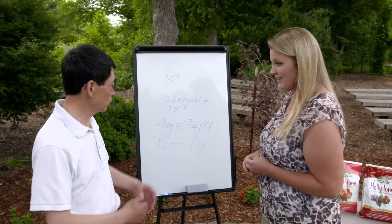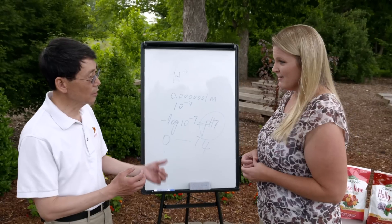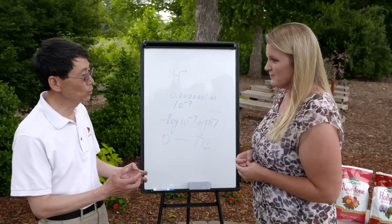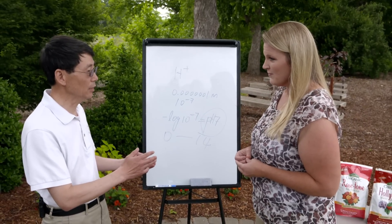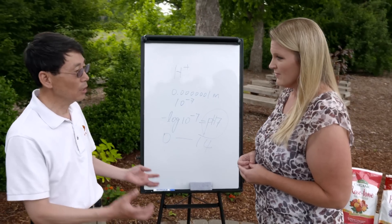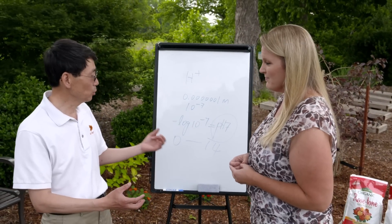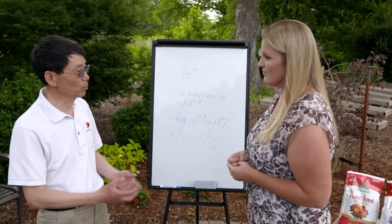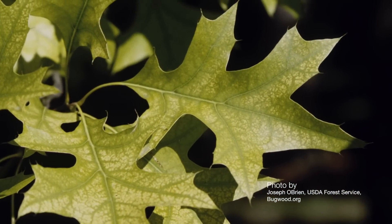You're exactly right. Some of the nutrients like iron and zinc — those are micronutrients. When the pH is about eight or seven and a half, they become solid. So that's why we see iron chlorosis and other problems. A lot of our pin oaks have that problem.